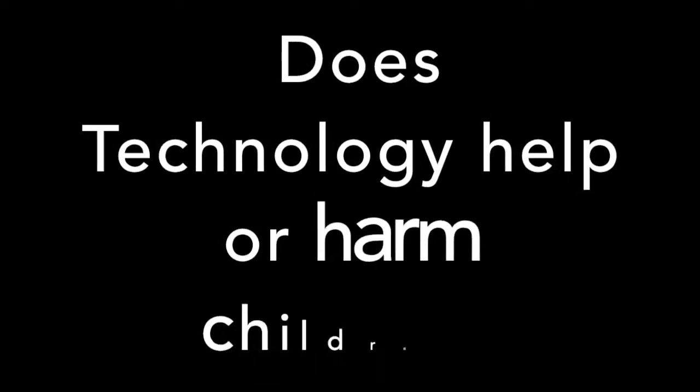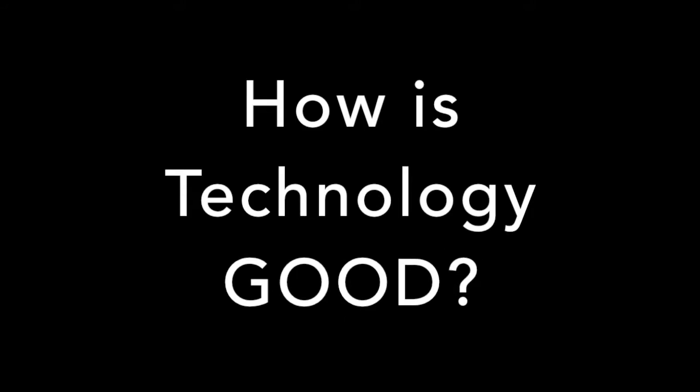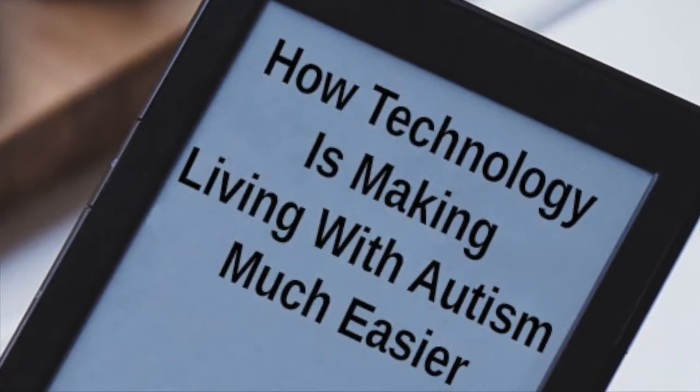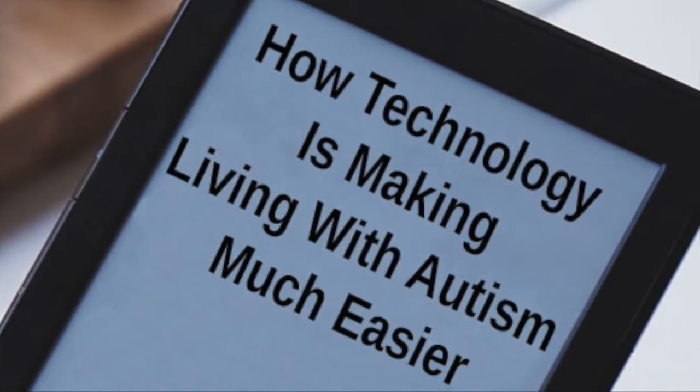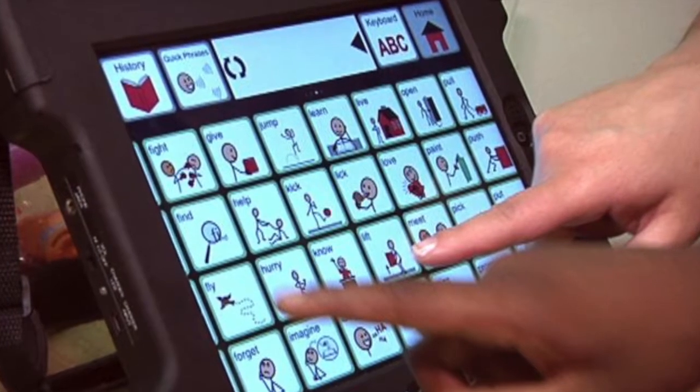The question is: does technology help or harm children with autism? Technology can withhold the development of children with autism — obsessive technology use can result in less social skills, worse academic performance, and a smaller attention span. However, technology can also be used as a supportive tool to help children with autism and their parents manage daily challenges.